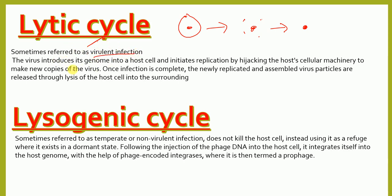The virus introduces itself into the genome of the host cell and initiates replication by hijacking the host cellular machinery to make new copies of the virus. Once infection is complete, the newly replicated and assembled viral particles are released through the lysis of the host cell into the surrounding environment.